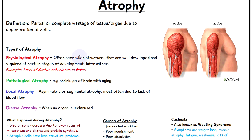Physiological atrophy is when you have certain structures which are well developed and are required at certain times or stages in life, but then later on they're not needed, so they break down and wither. An example of this is the loss of the ductus arteriosus in the fetus.